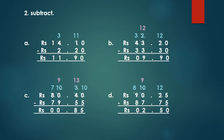Let's solve part D. Rupees 90.25 minus rupees 87.75. 5 minus 5 equals 0. Children, we cannot subtract 7 from 2, so we borrow. Next number is 0, so we borrow from the next. 9 becomes 8 and 0 becomes 10. From this 10 we borrow, so 10 becomes 9 and 2 becomes 12. 12 minus 7 equals 5. Put point there. Then 9 minus 7 equals 2. And 8 minus 8 equals 0. Write rupees sign also. So our answer is rupees 2.50.